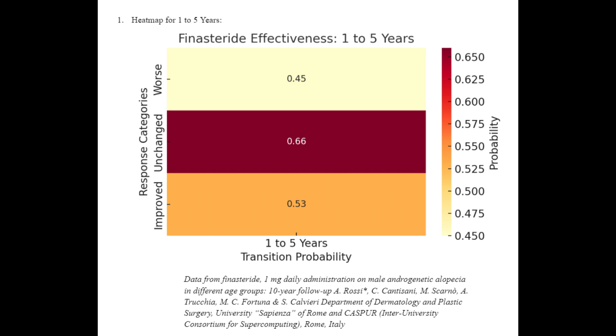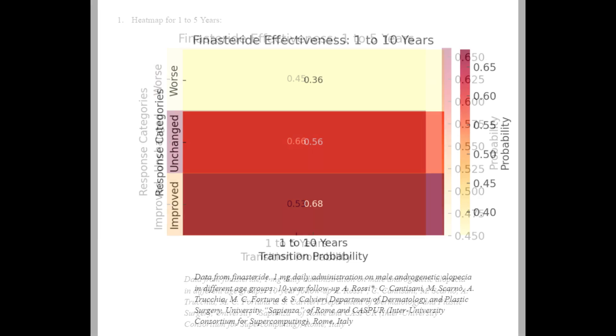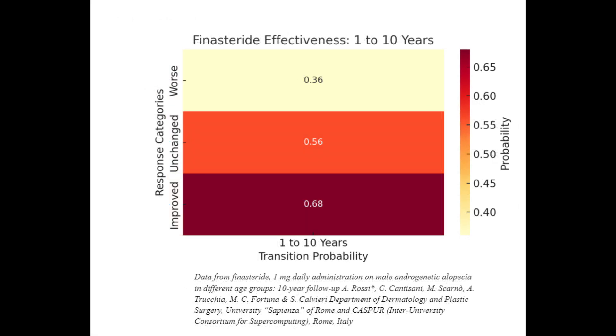For instance, if someone's condition improved in the first year, there's a 68% chance that they will either maintain or see further improvements in their condition by the 10th year.